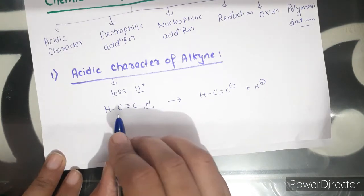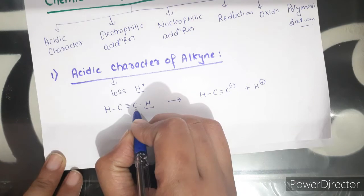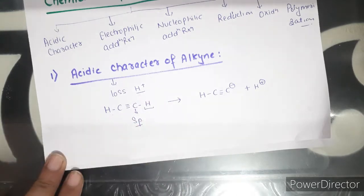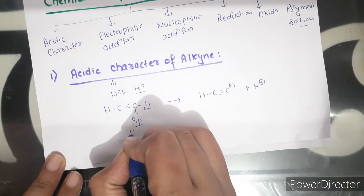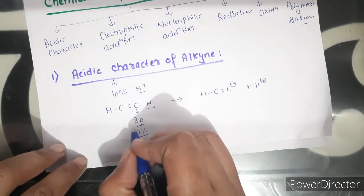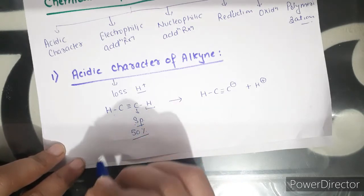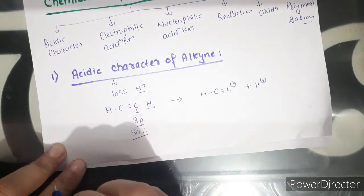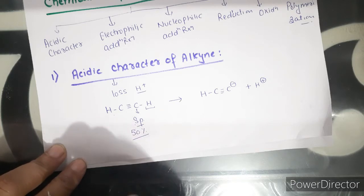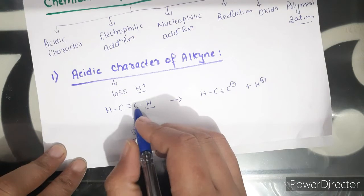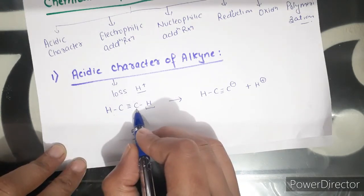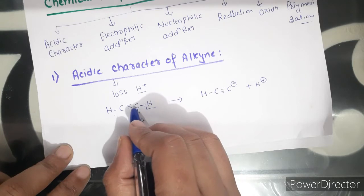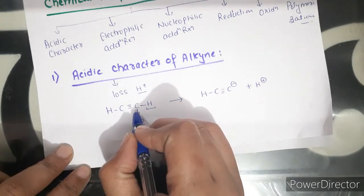Why are alkynes acidic in nature? In alkynes, carbon atoms are attached by a triple bond, which means carbon is sp-hybridized. In sp-hybridization, the s-character becomes 50%. We know that electrons in s-orbitals are more tightly held by the nucleus than in p-orbitals. This means sp-hybridized carbon has a higher electronegativity value, and the electron pair is more delocalized towards the carbon.